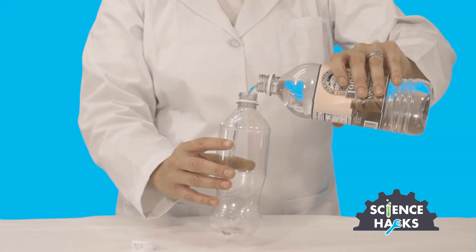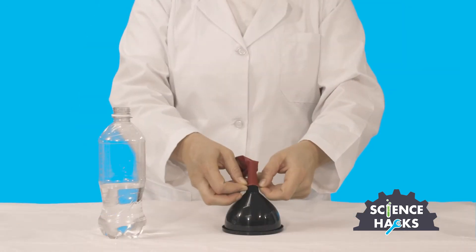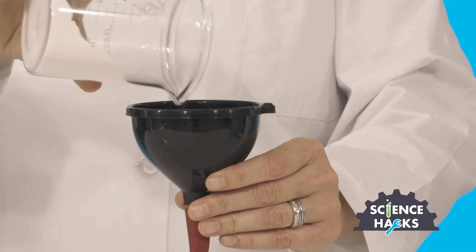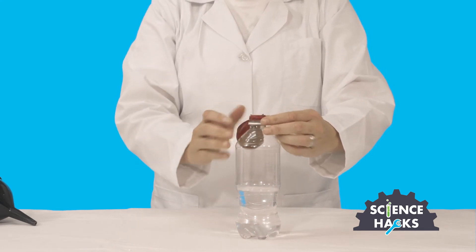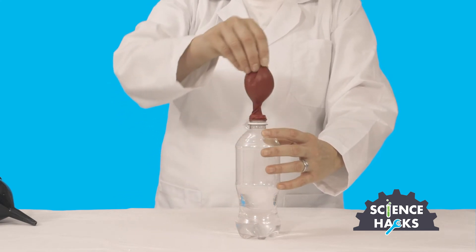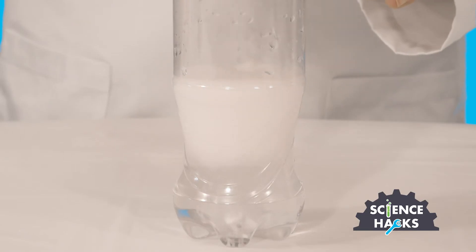Are you ready? Pour vinegar in the bottle. Use the funnel to fill the balloon more than halfway with baking soda. Put the neck of the balloon on the bottle without letting any baking soda into the bottle. Lift the balloon up so that the baking soda mixes with the vinegar, watch the fizz inflator at work.